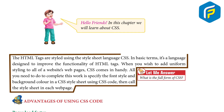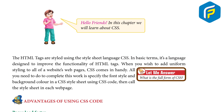Hello friends, in this chapter we will learn about CSS. The HTML tags are styled using the style sheet language CSS. In basic terms, it's a language designed to improve the functionality of HTML tags. When you wish to add uniform styling to all of your website's web pages, CSS comes in handy. All you need to do is specify the font style and background color in a CSS style sheet, then call the style sheet in each web page.